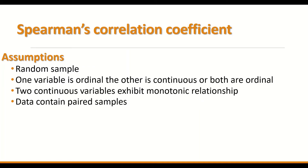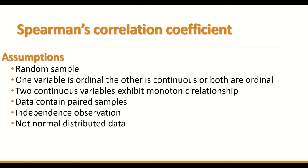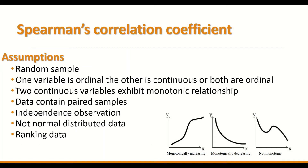The data must contain paired samples with independent observations, or two variables that are not normally distributed, or ranked data. The test is used for non-linear — i.e., monotonic — relationships between two variables. It is a non-parametric test for data that are not normally distributed, ranked, or ordinal.